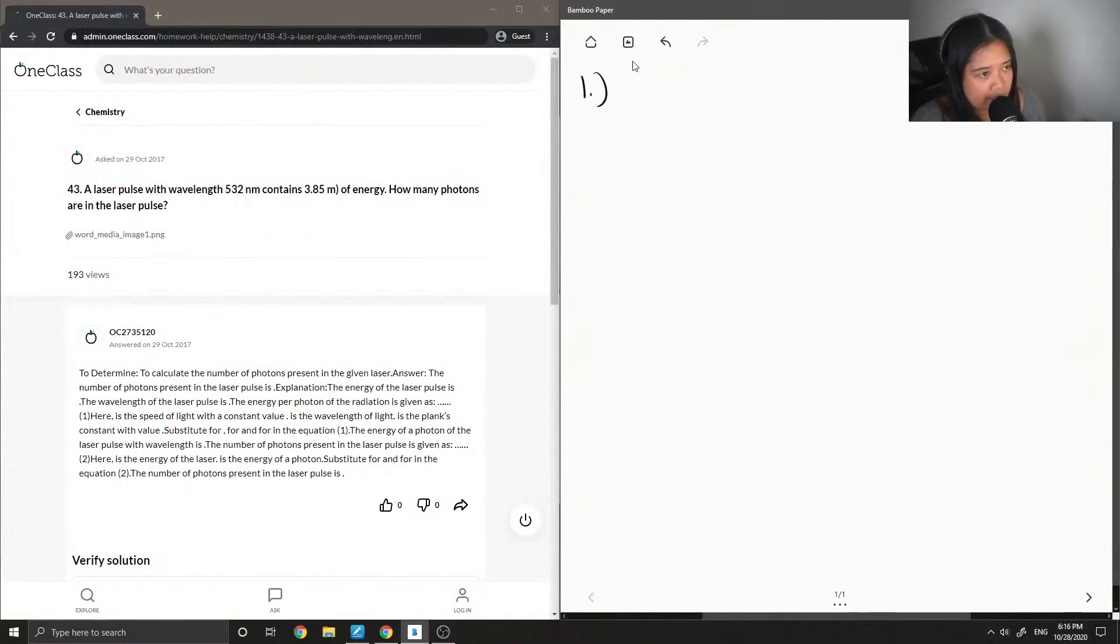First I'm going to write down everything that I know. The wavelength of the laser pulse is 532 nanometers, and I'm going to convert this to meters so that everything is in the same units. That'll be 532 times 10 to the negative 9 meters.